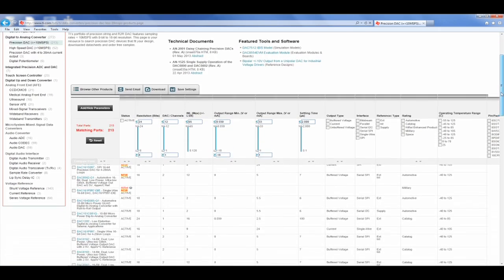You'll see that this Parametric Search Tool displays all of the same specifications that we just got done discussing, such as INL. The Parametric Search Tool also offers number of channels and resolution.